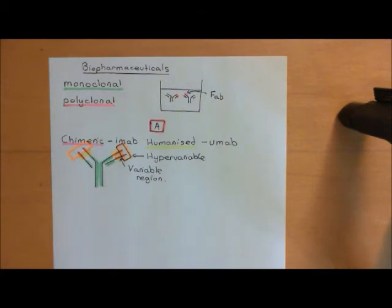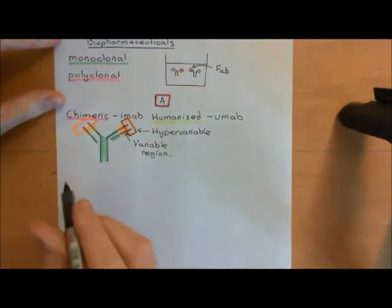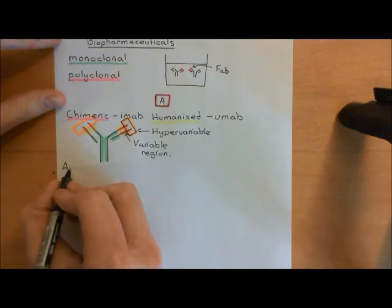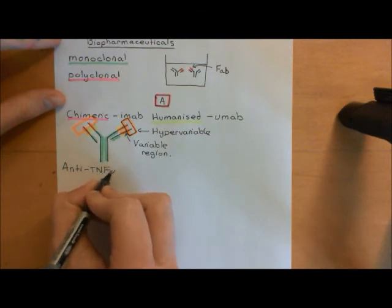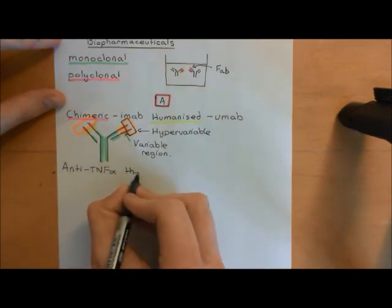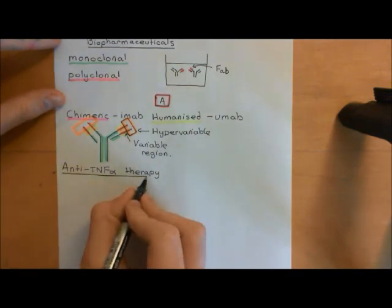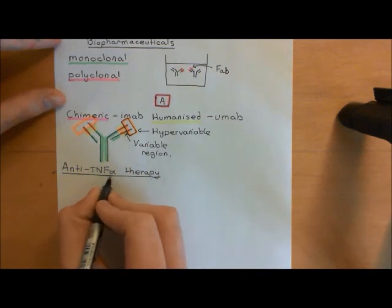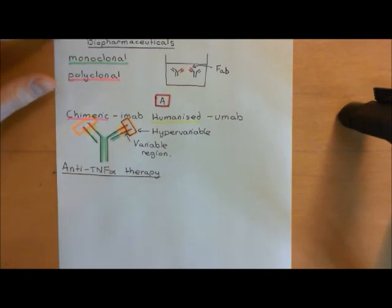Neither chimeric nor humanized antibodies initiate the immune response, so they don't cause immune rejection. Armed with this understanding of monoclonal antibodies, let's now talk about some biopharmaceuticals. We'll start with anti-TNF alpha therapy — biopharmaceutical molecules capable of binding to and neutralizing tumor necrosis factor alpha so that TNF alpha can no longer have any effect on cells.